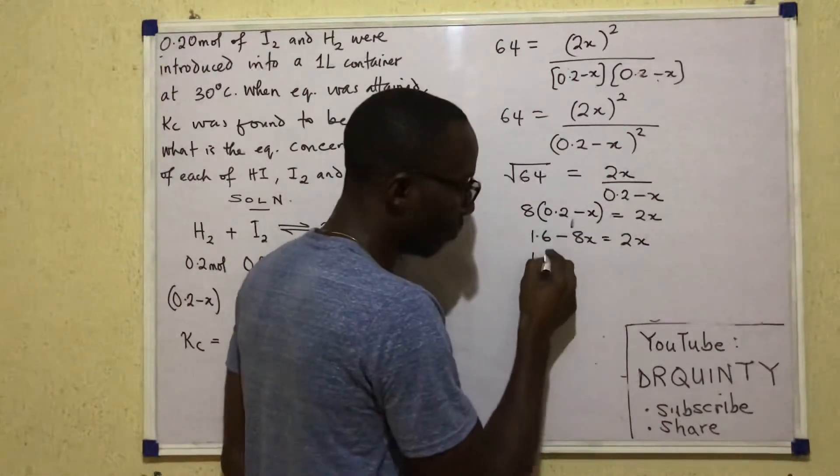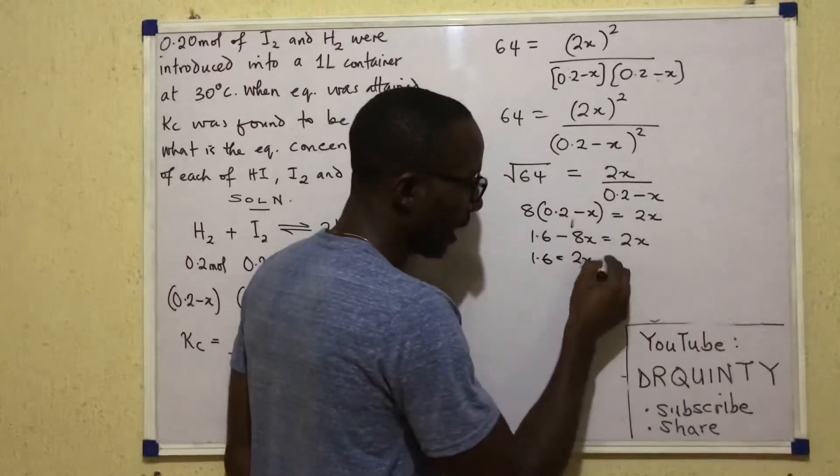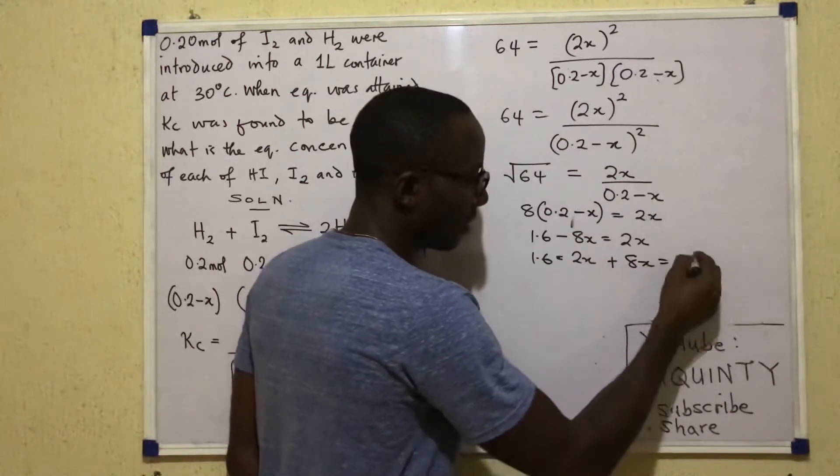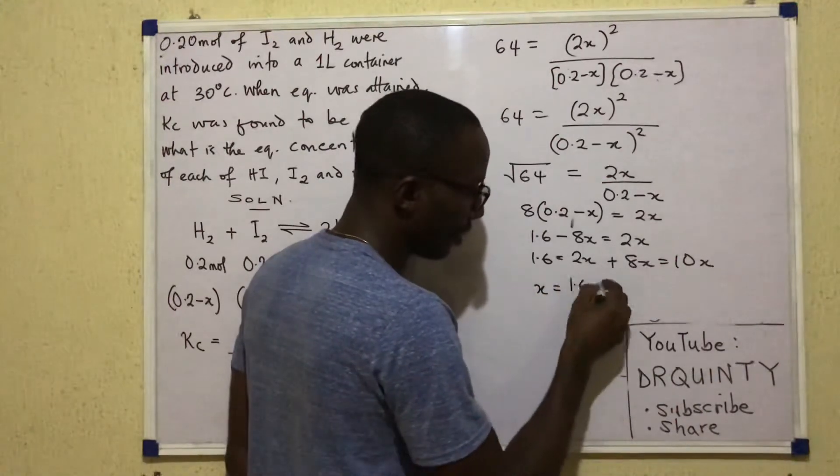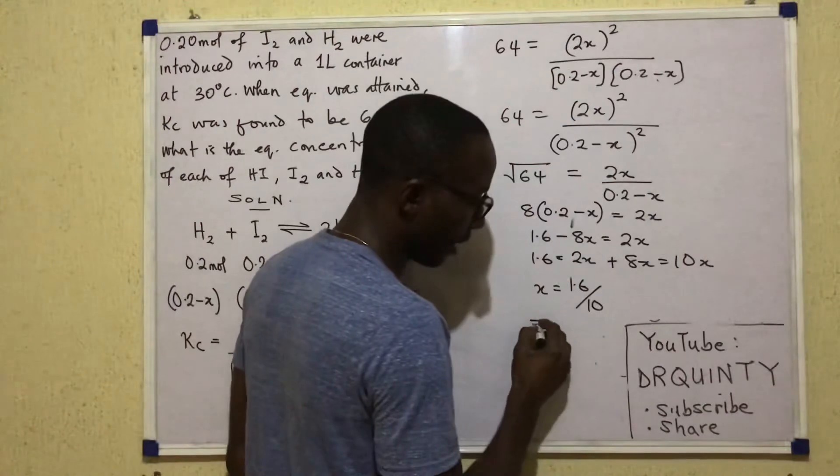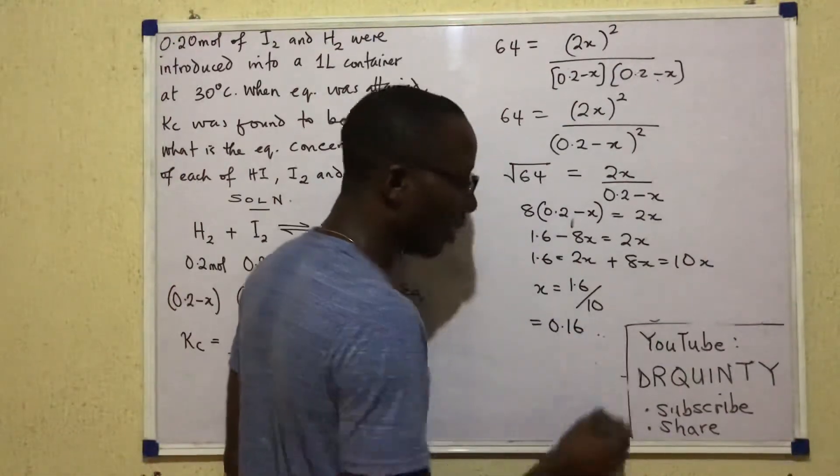So that 1.6 equals 2X plus 8X and that is 10X. So that X is finally 1.6 divided by 10 and that gives me 0.16.